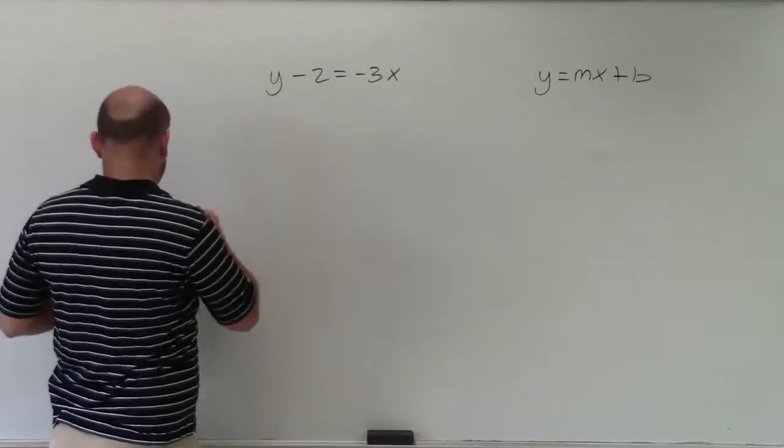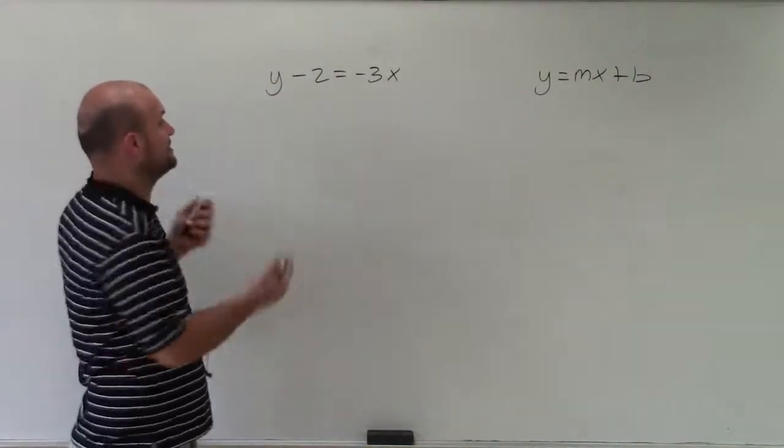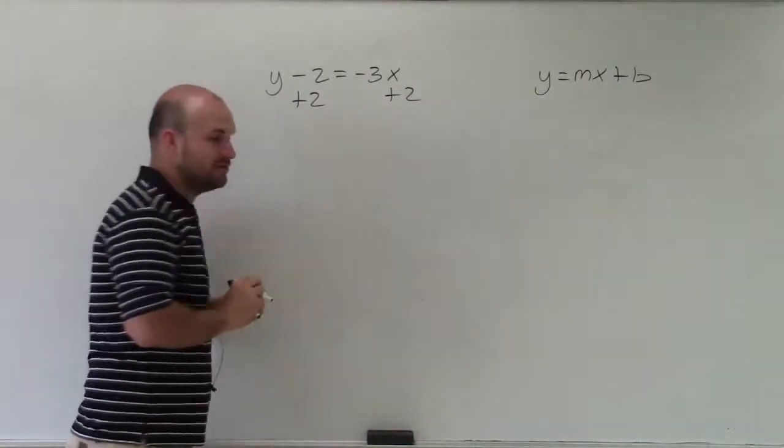So I look at this variable and I say, all right, what is happening to my variable that is preventing it from being by itself? Well, you can see it's being subtracted by 2. So therefore, I need to add 2. And I need to add 2 on both sides.